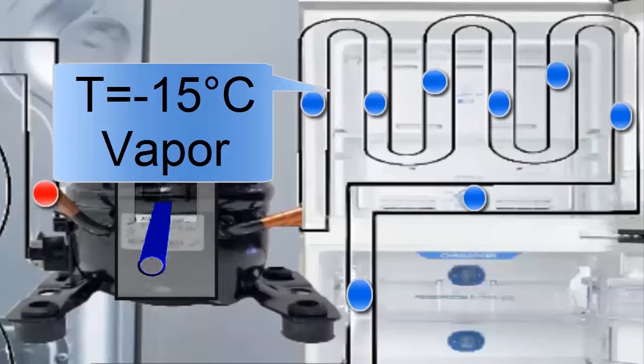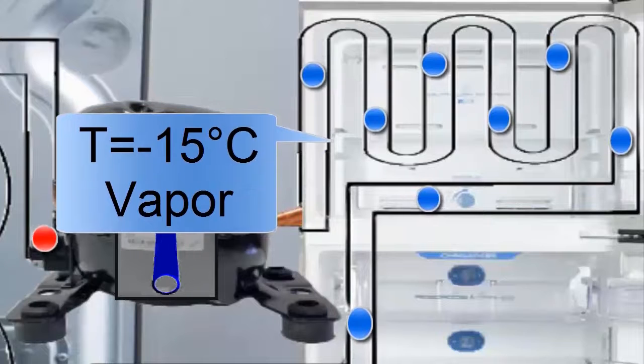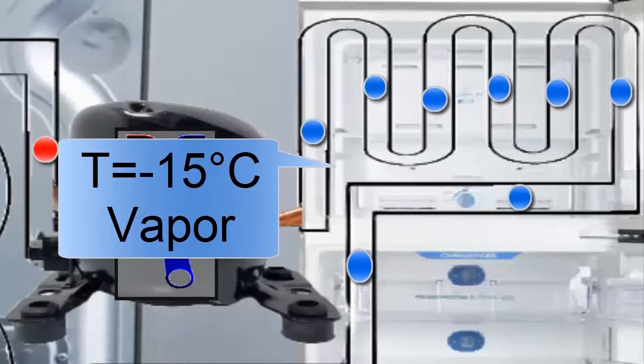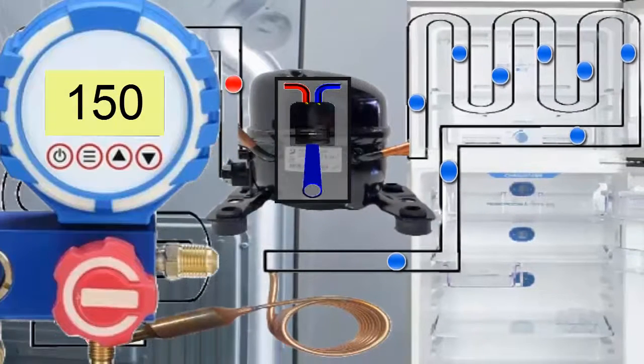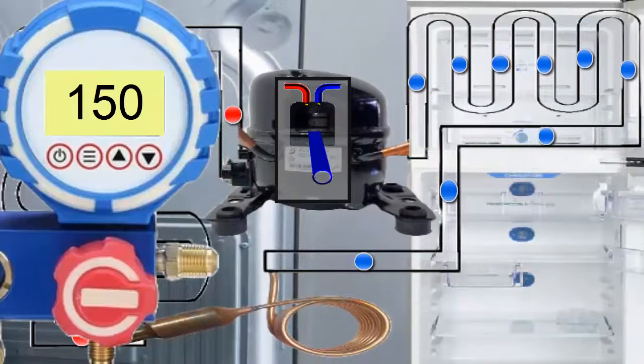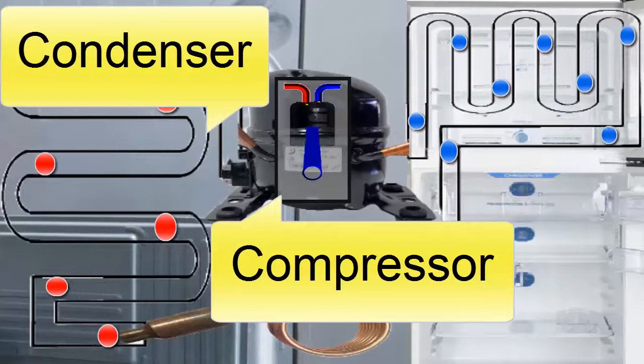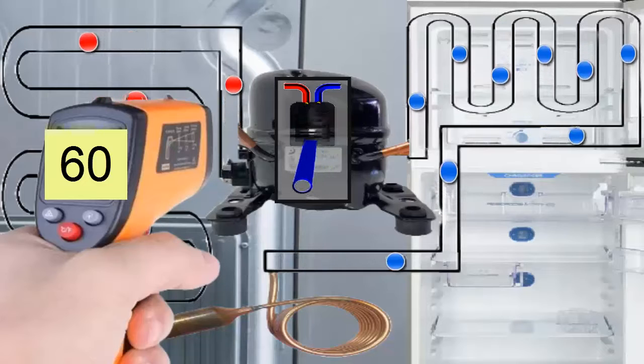The pressure and temperature of the refrigerant increase significantly in the compressor. The pressure of the R134A at the compressor outlet reaches a value close to 150 pounds per square inch. The temperature of the R134A at the compressor outlet can be around 60 degrees Celsius.